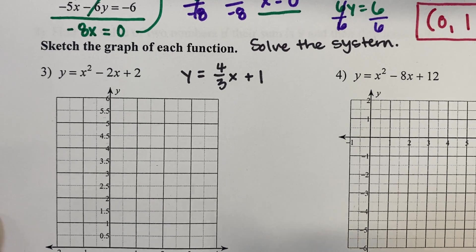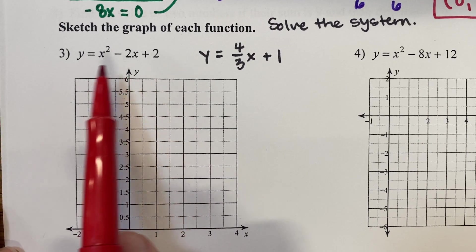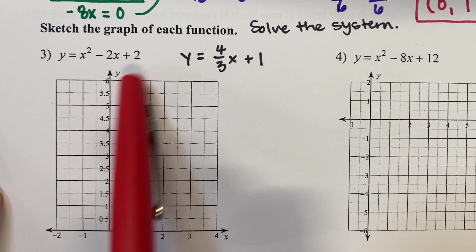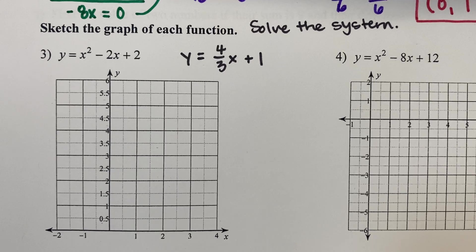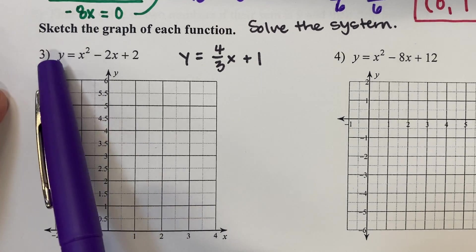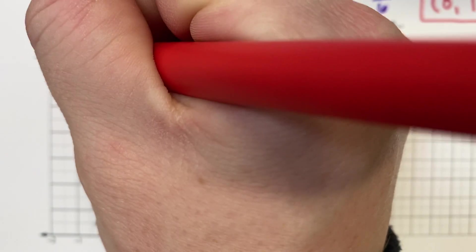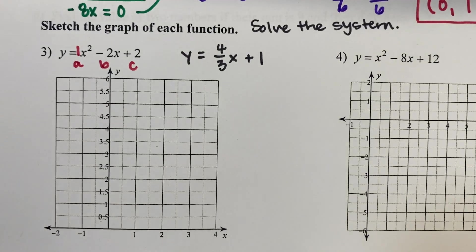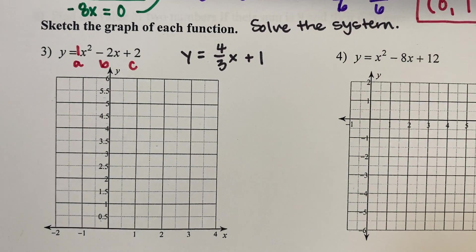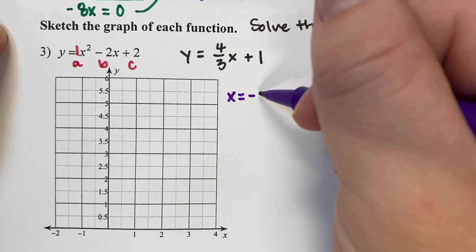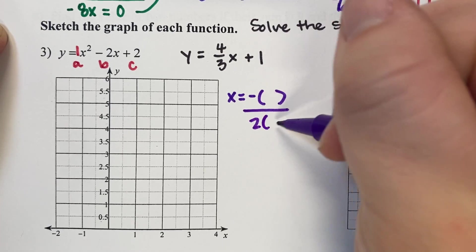Now we talked about solving systems by graphing. We have a quadratic equation and a linear equation, so let's graph the quadratic first — that one probably takes the most time. This quadratic is in standard form, which tells us a, b, and c, where our a is that invisible 1 in front. To find the vertex, we use the formula x equals negative b over 2 times a.